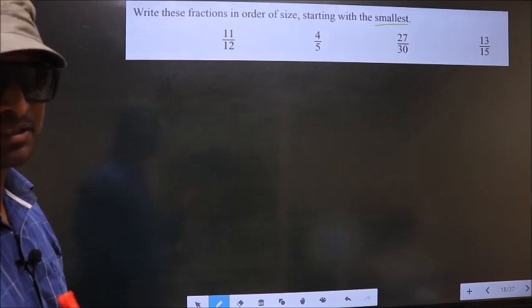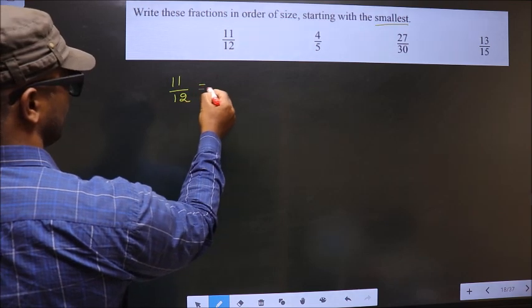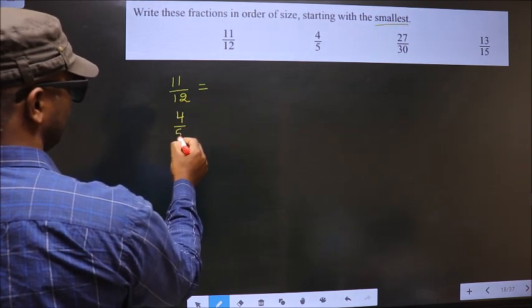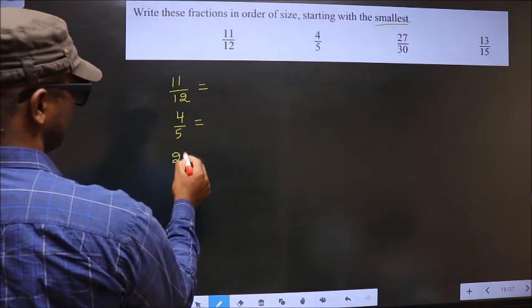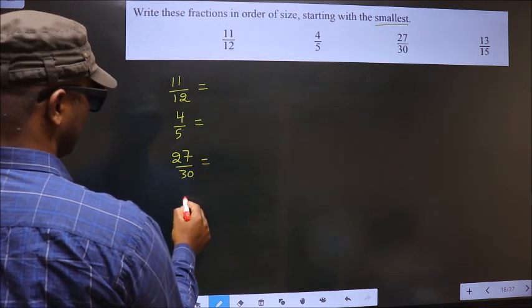First, the given fractions are 11 by 12, 4 by 5, 27 by 30, and 13 by 15.